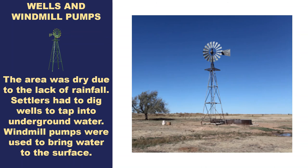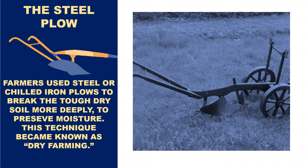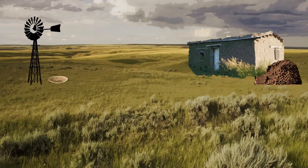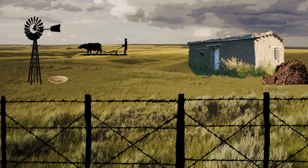The area was dry due to lack of rainfall, so settlers had to dig wells to tap into underground water, and windmill pumps were used to bring water to the surface. Farmers used steel or chilled iron plows to break the tough dry soil more deeply to preserve moisture — a technique known as dry farming. The steel plow greatly reduced the number of man-hours required to till the fields. Other technologies, such as the mechanical reaper, also increased efficiency. Sod houses, wells and windmills, buffalo chips, the steel plow, and barbed wire — all of which made the settlement of the West possible.